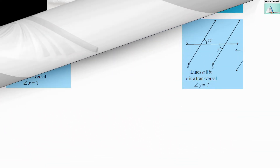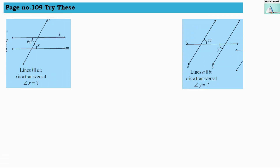So number 109, try this sum. Here they are saying that line L and M both are parallel. T is a transversal. So what will be the measure of angle X?